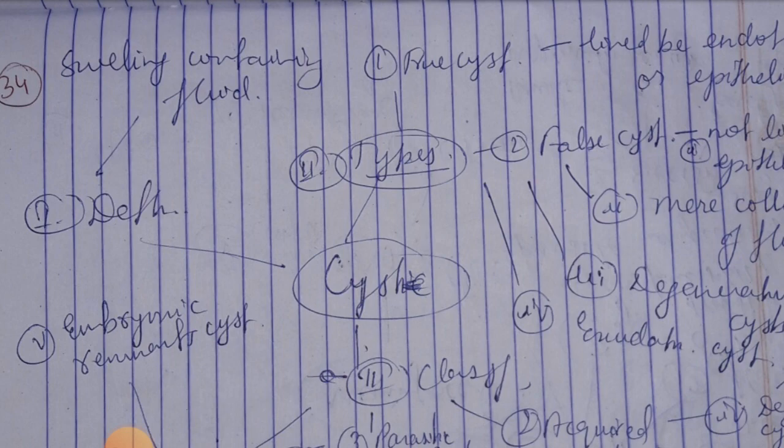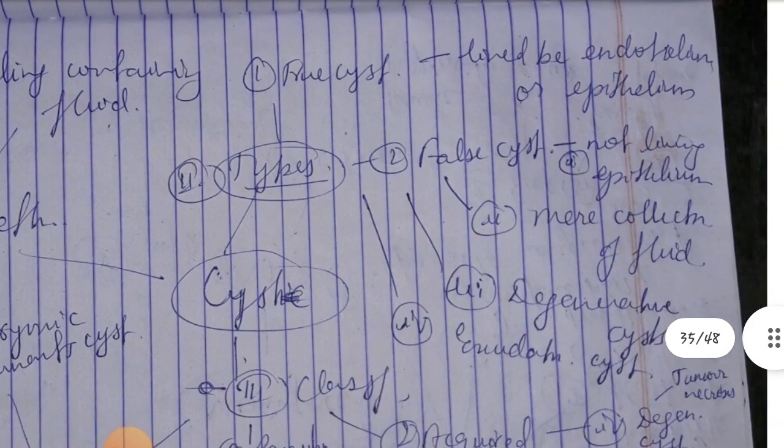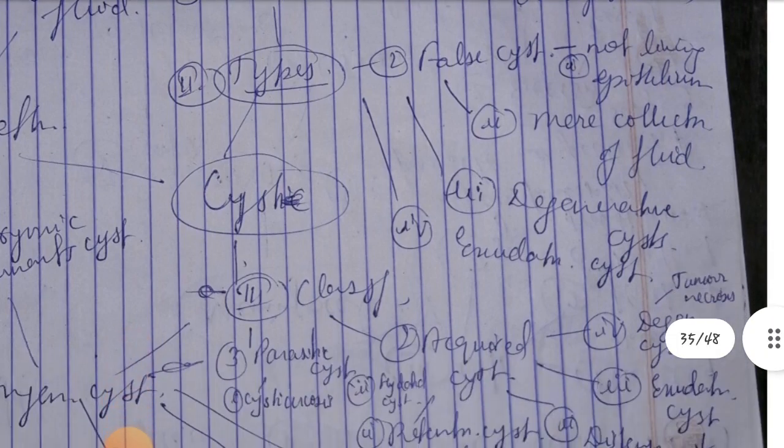Second, types: first, true cysts which are lined with endothelium and epithelium. Second, false cyst which is not lined with epithelium, just a collection of fluid. Third, degenerative cyst. Fourth, exudation cyst.